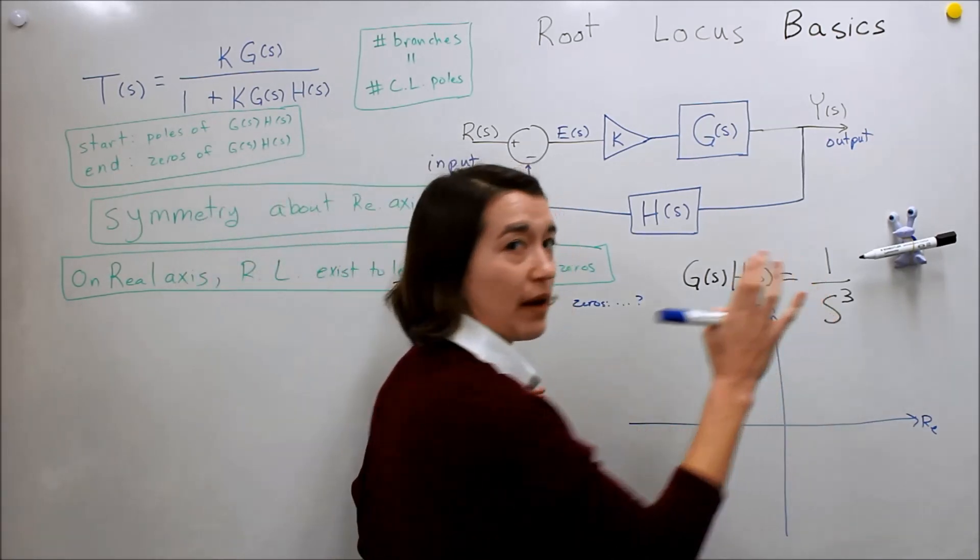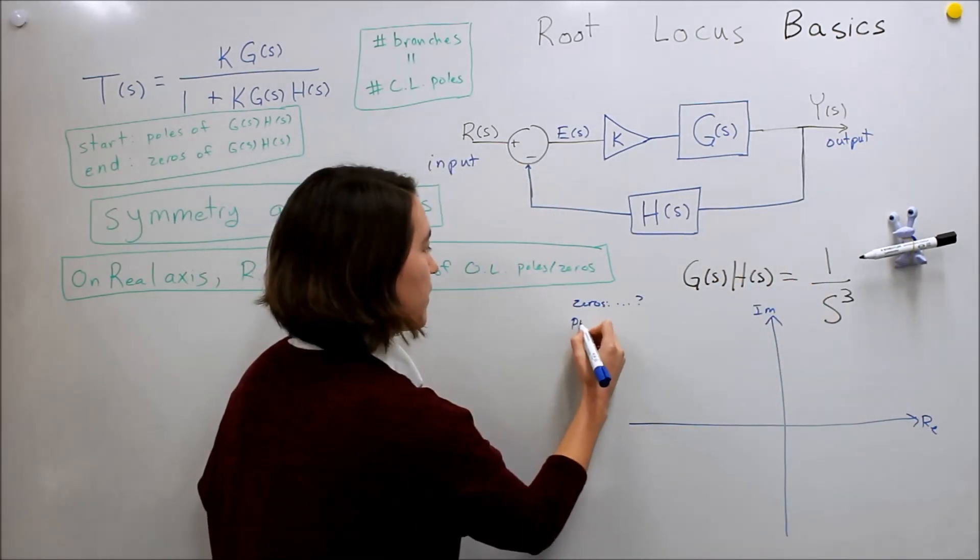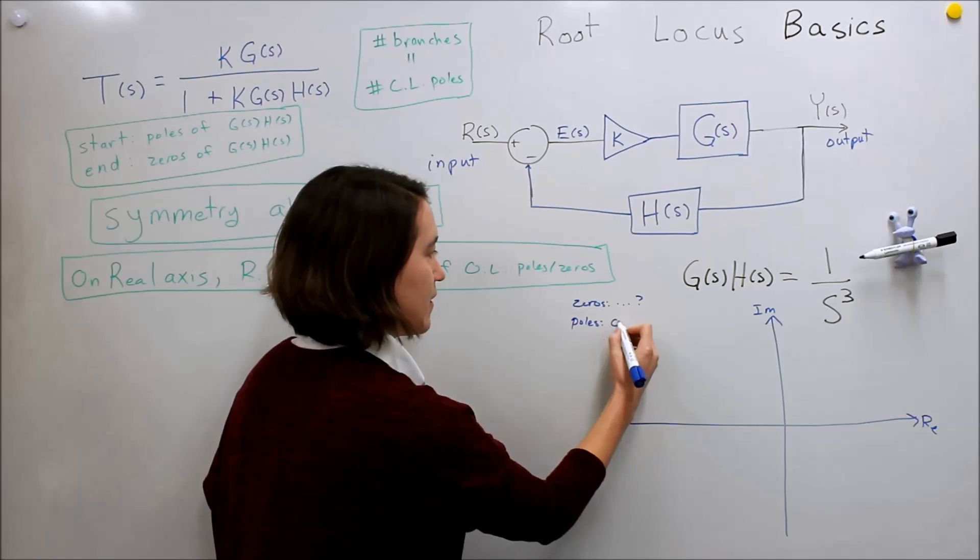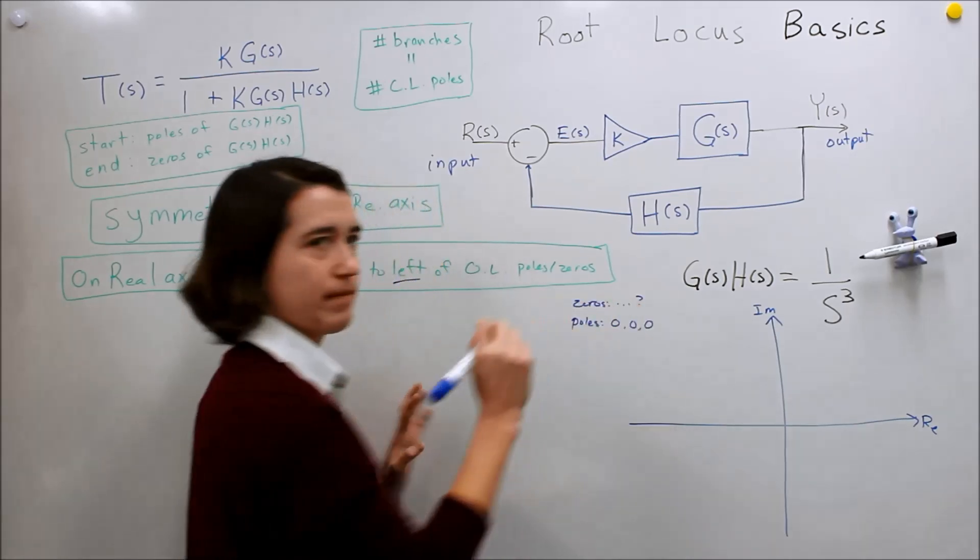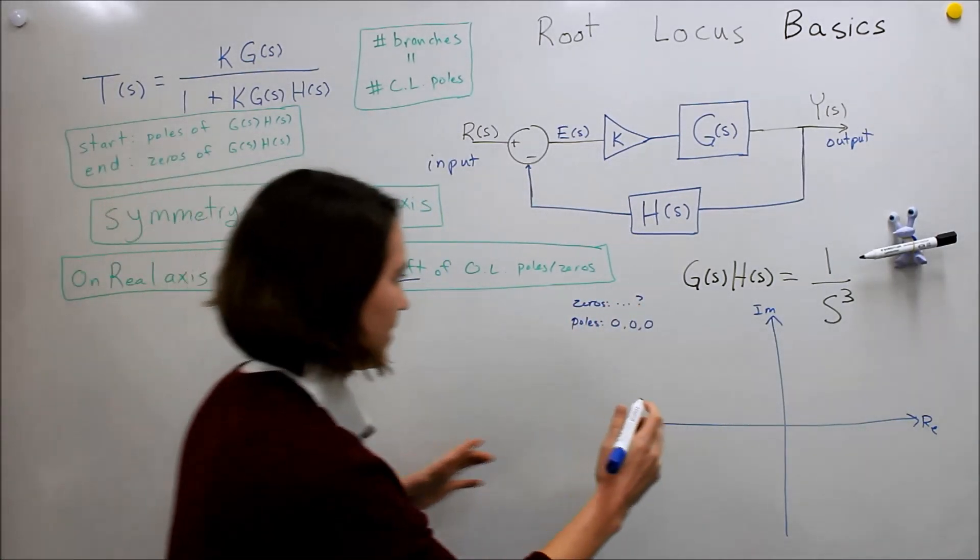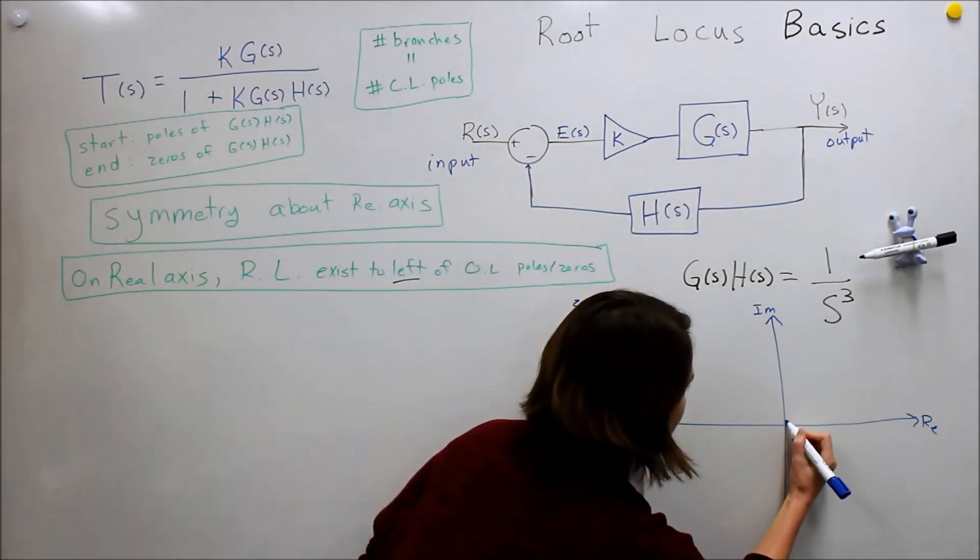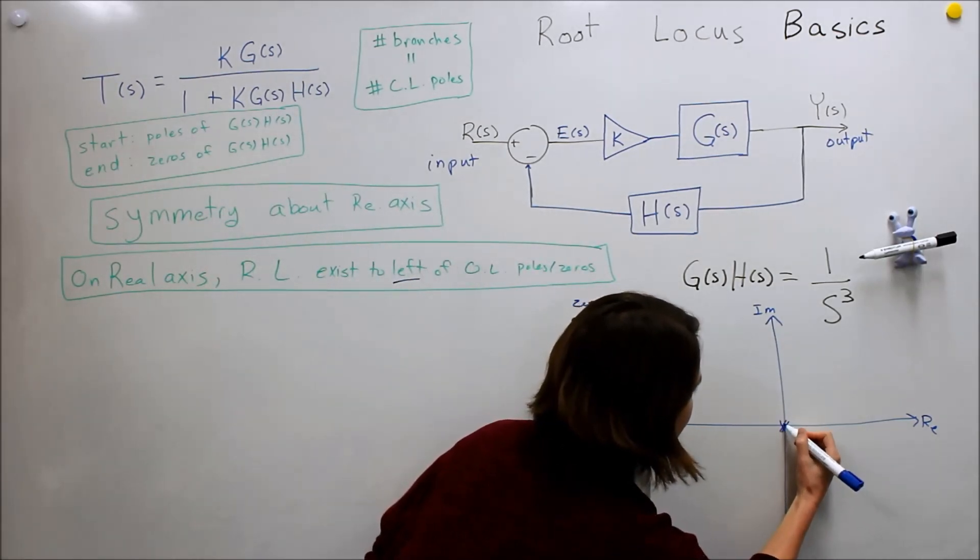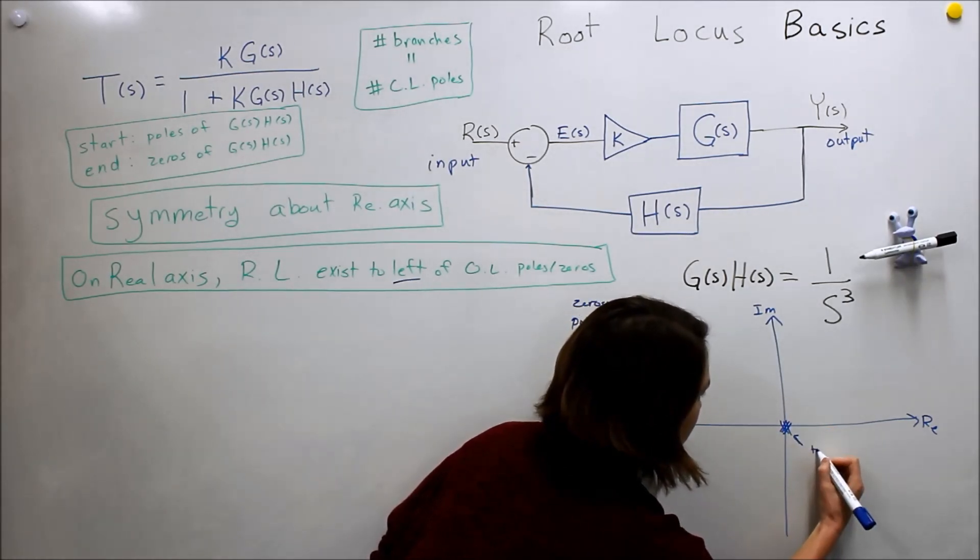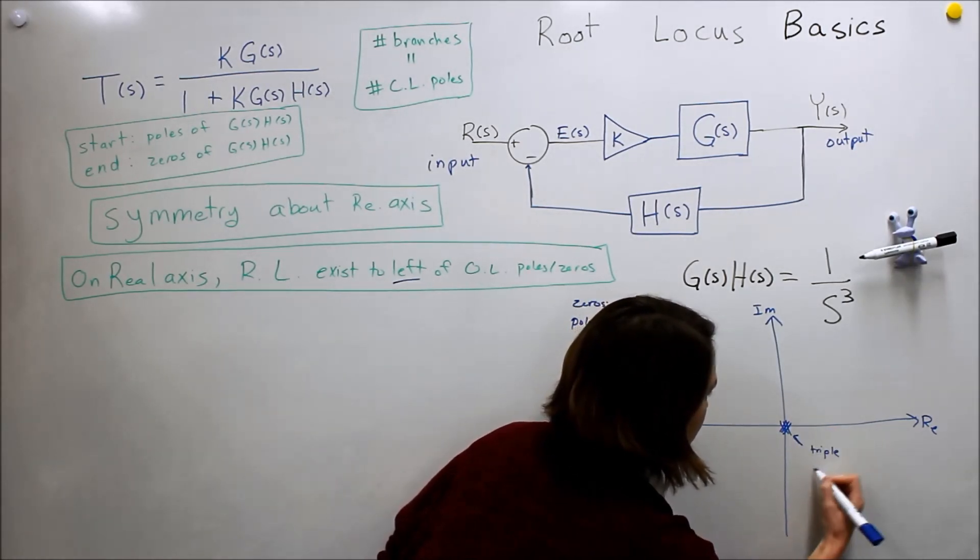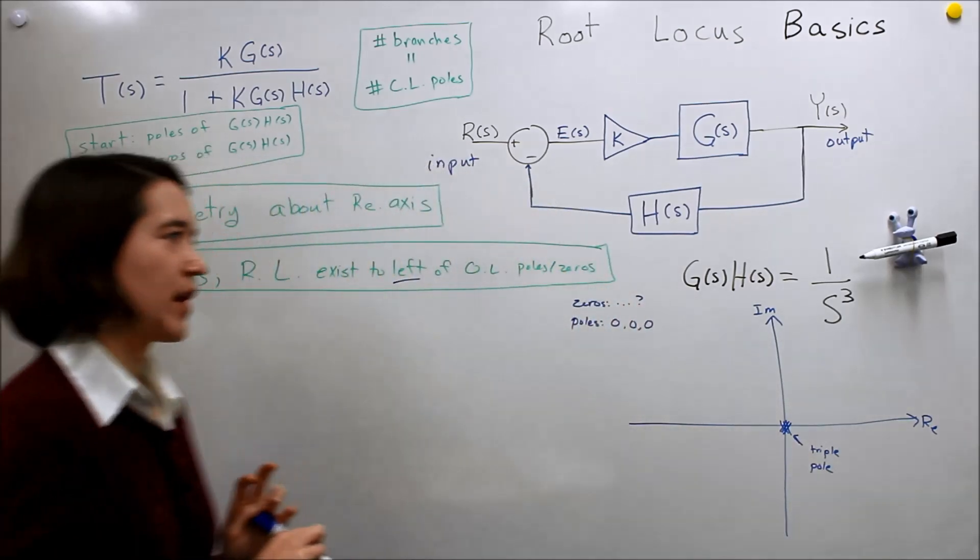And the poles, we have three poles. Poles at zero, zero, and zero. So it's kind of hard to represent that on this plane, but a lot of times people try to make x's that kind of look like they're over each other here. So we'll just say triple pole at zero.